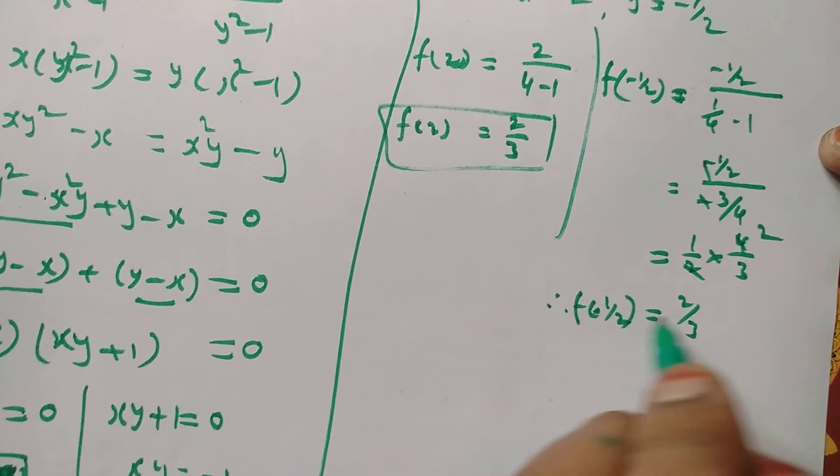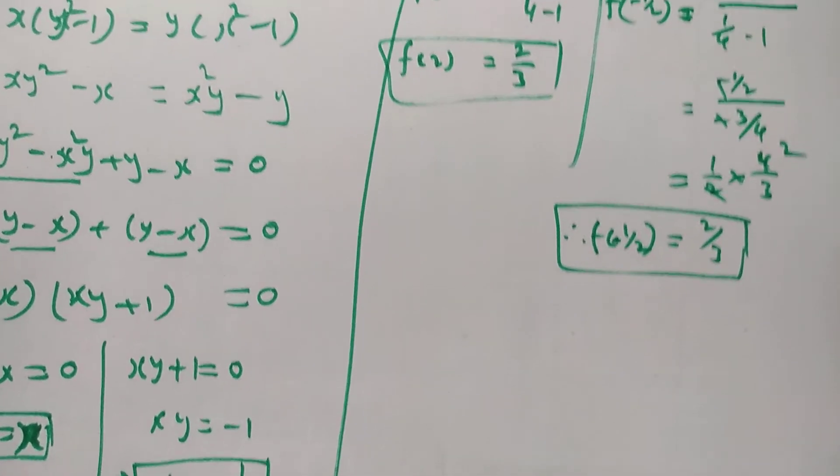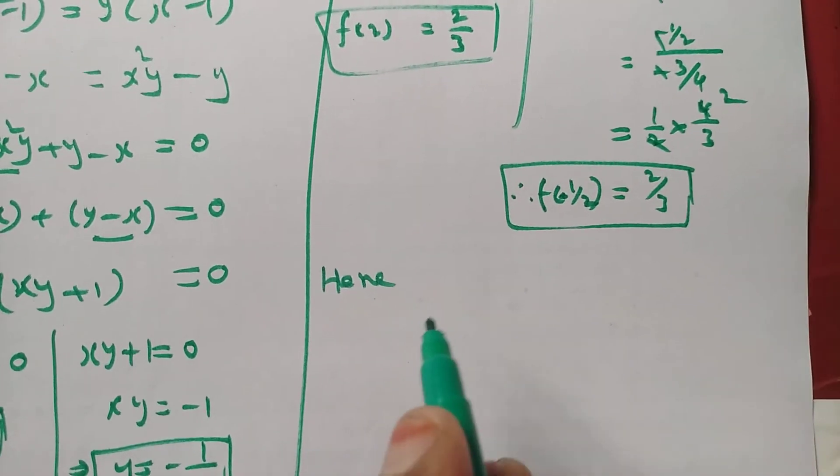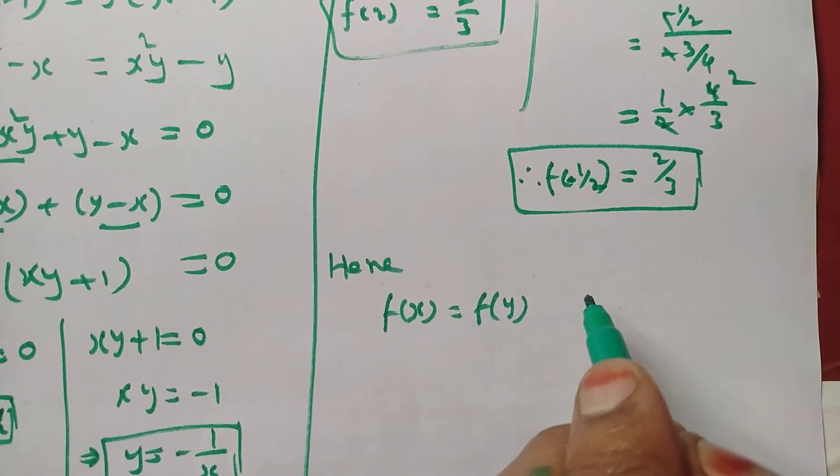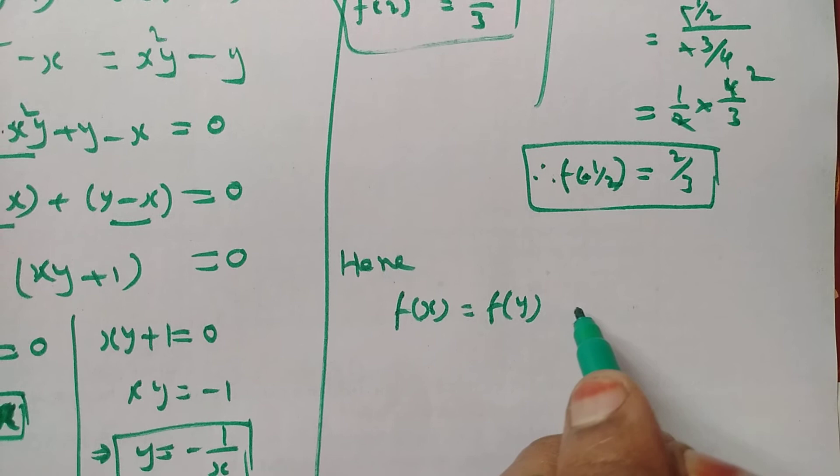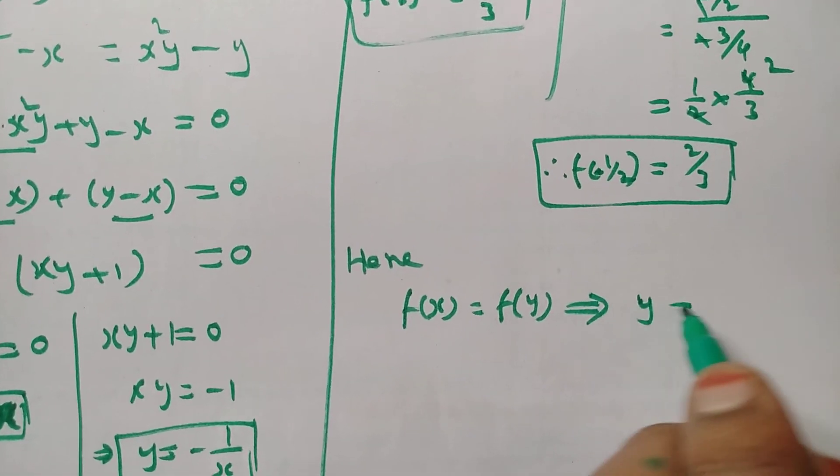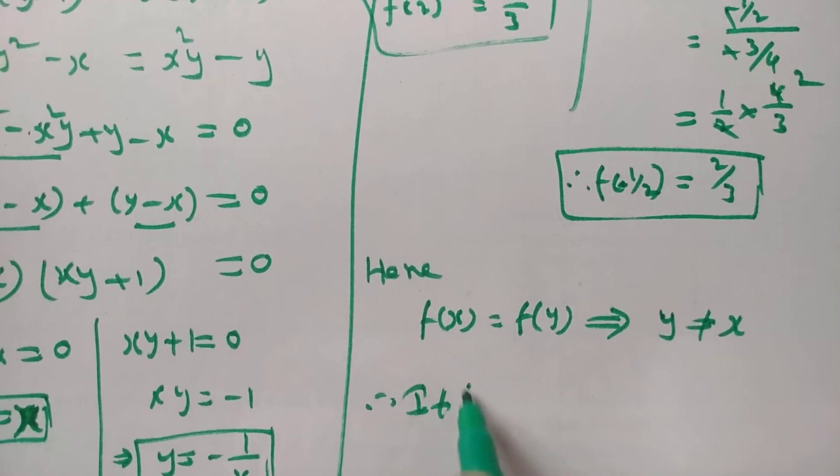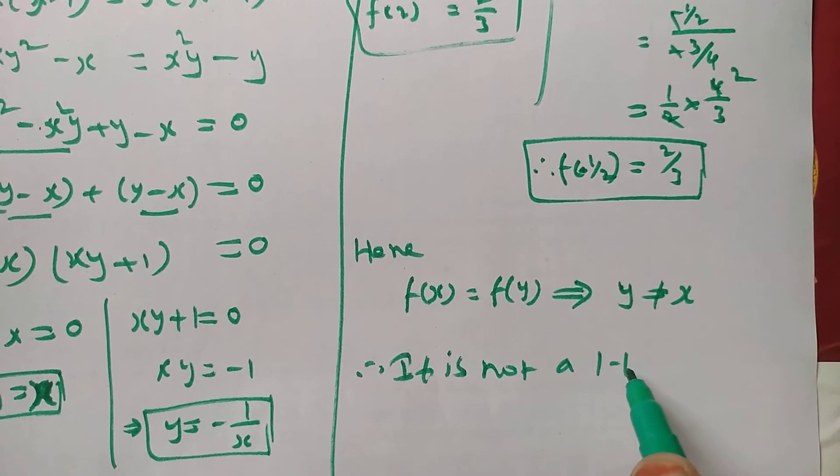Therefore f(-1/2) = 2/3. So here f(x) = f(y), which implies y ≠ x. Therefore it is not a one-to-one function.